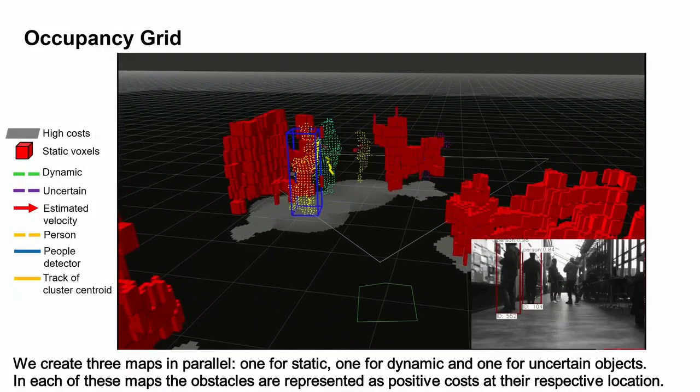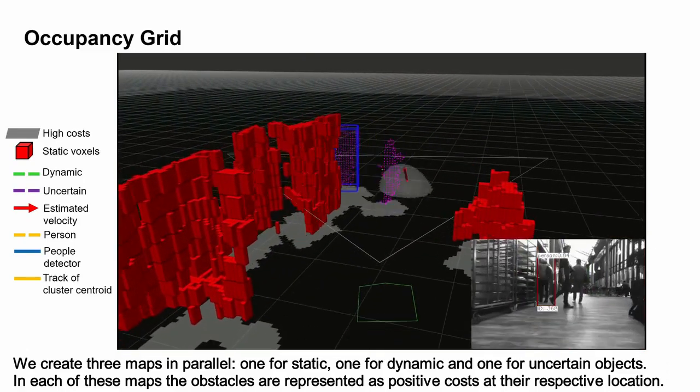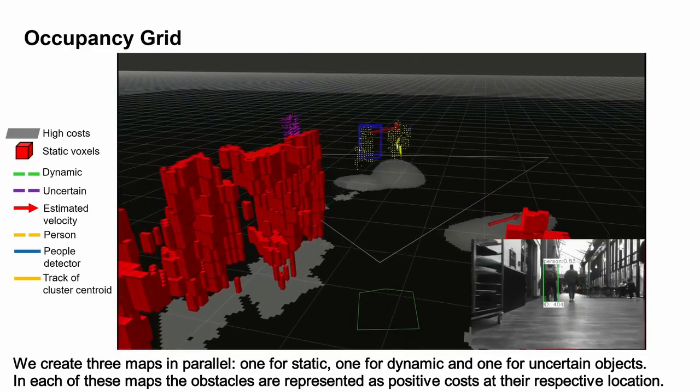One for static, one for dynamic, and another for uncertain objects. In each of these maps, the obstacles are represented as positive costs at their respective location.